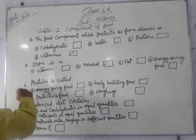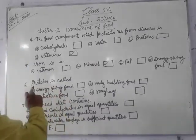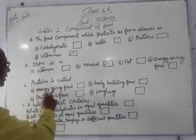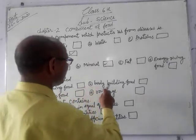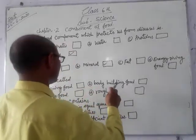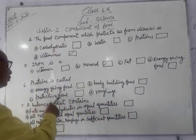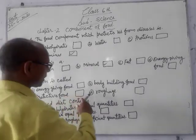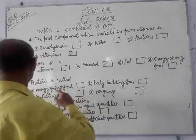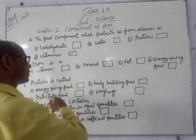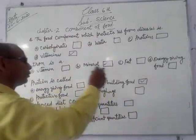Option number 6. Proteins. Option A: Energy giving food. Option B: Body building food. Option C: Protective food. Option D: Energy. The correct option is B — Body building food.